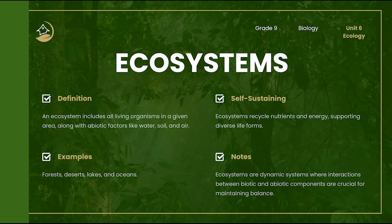An ecosystem is a combination of the living or biotic and non-living or abiotic things in a specific environment. Examples of ecosystems include forests, deserts, oceans, and lakes. Ecosystems are self-sustaining, meaning they recycle energy and nutrients. Plants absorb sunlight, animals eat plants, and decomposers break down waste — creating a loop that keeps life going. When one part of the system is disturbed, like pollution or species loss, it can affect the entire ecosystem.